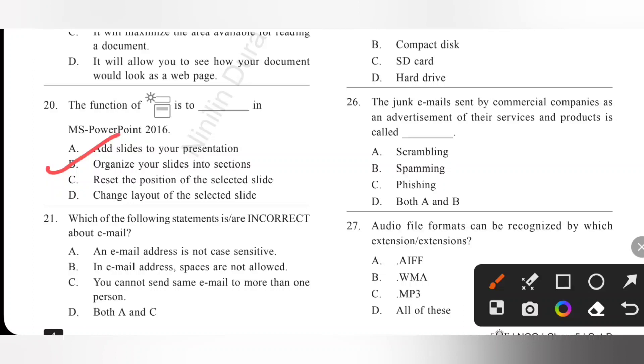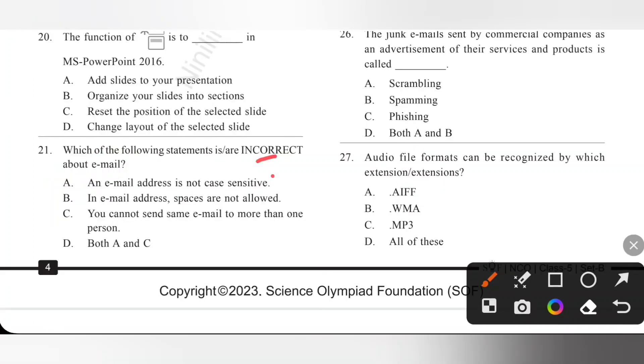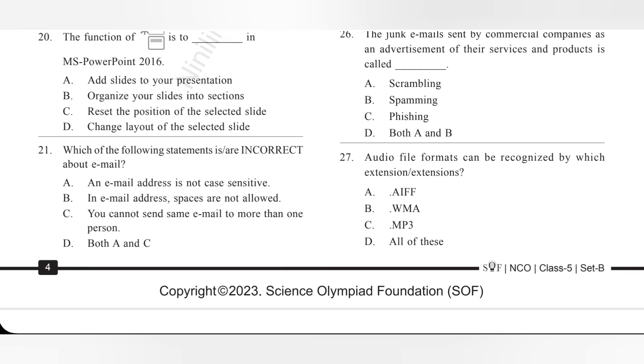Next 21, which of the following statements are incorrect about email? A: an email address is not case sensitive - correct statement. B: in email address spaces are not allowed - yes, also correct. C: you cannot send same email to more than one person. This is incorrect. Actually we can forward same email to more than one person. Option C is the incorrect statement. Option C is the correct answer.